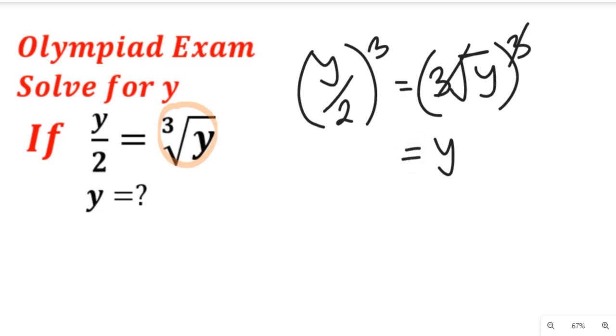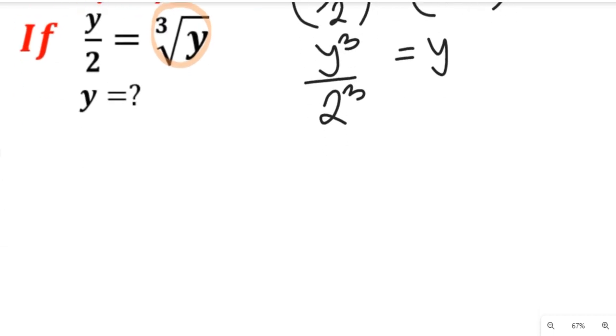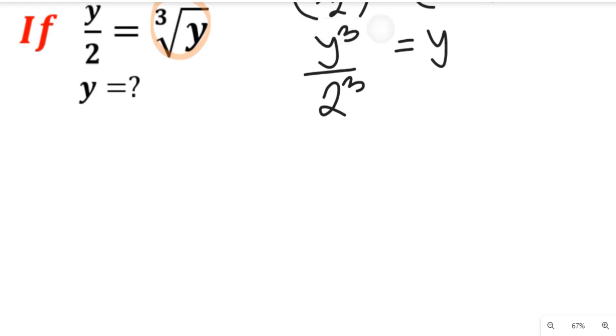And this will be equal to, it is permissible in mathematics to separate this exponent, so this will give us 2 to the power of 3 and y to the power of 3. Now when we simplify this further, this will give us y³ divided by 8, because 2 times 2 times 2 is equal to 8, all equal to y.